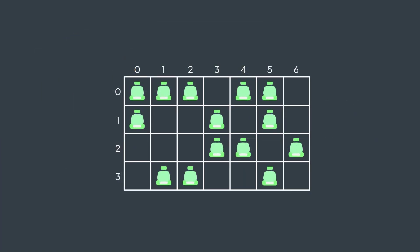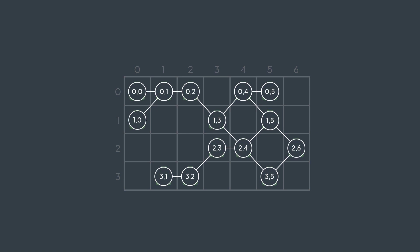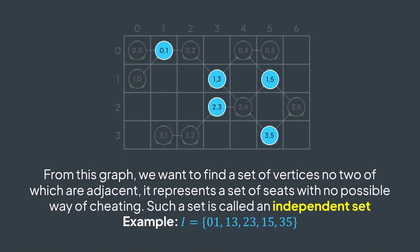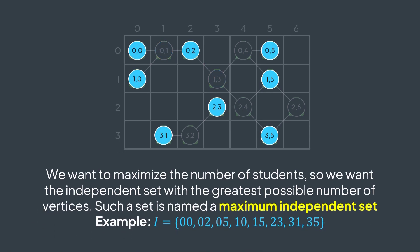Let's say that we have this classroom. We can represent it by using a graph where vertices represent seats, and an edge between two seats means that one of the seats can see answers of the other seat. We can fill edges by checking, for each seat, other seats it can see answers from. From this graph, we want to find a set of vertices with no edge between any two vertices of that set, because we want to make cheating impossible. Such a set is called an independent set — a set of vertices of a graph, no two of which are adjacent.